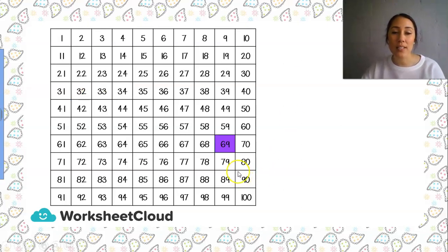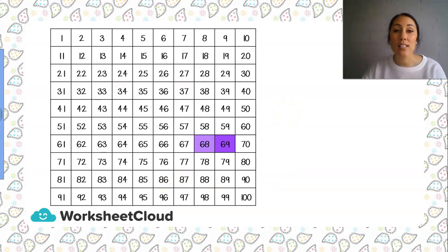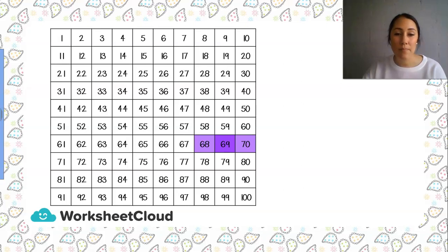Our next number is 69. Here you can see it's much further down on our 100 chart, closer to 100 than to 1. The number before 69 is 68, and the number after 69 is 70. Well done.